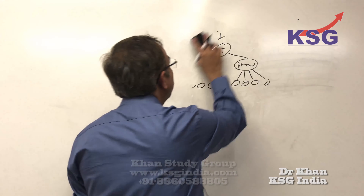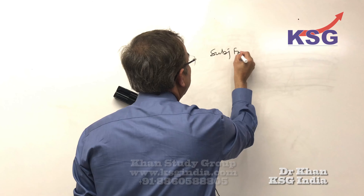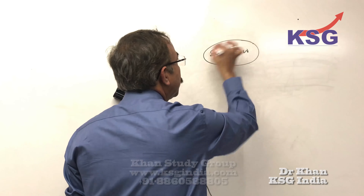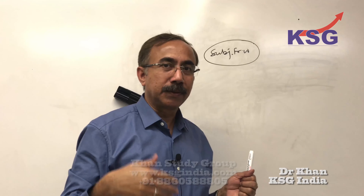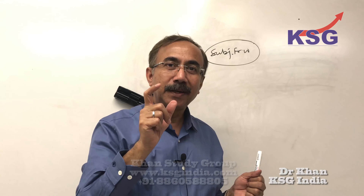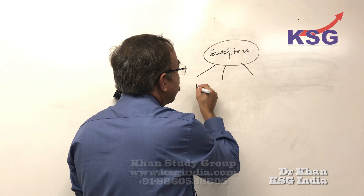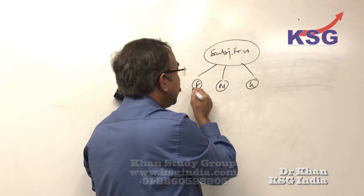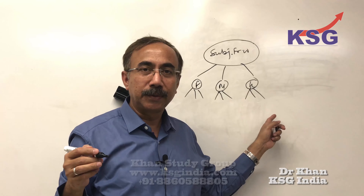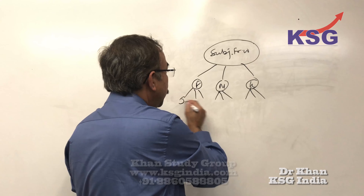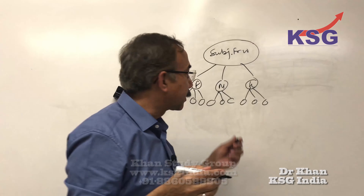The second type is what we can call subject framework. Subject framework is driven by the topic itself. For example, if you have a topic like 'Indian society at the crossroads,' the subject sociology comes in. So you could take up family, marriage, and kinship, and then write a few paragraphs on family, a few on marriage, and a few on kinship.